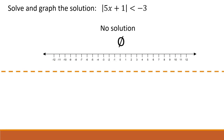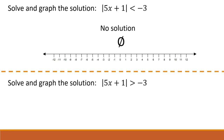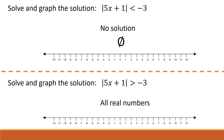Here's the second problem with a surprise answer: solve and graph the solution to the absolute value of 5x plus 1 is greater than negative 3. Absolute value is a distance from 0, so we're looking for something with a distance from 0 greater than negative 3. Every distance is a positive value or 0, which means this is always a true statement — distance will always be bigger than negative 3. Every value for x will make this true, so the solution is all real numbers, meaning every number on the number line makes this inequality true.